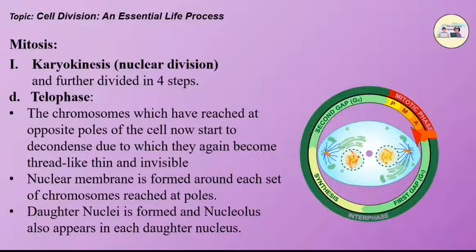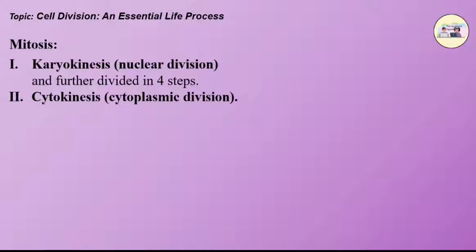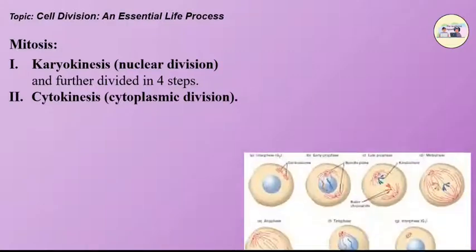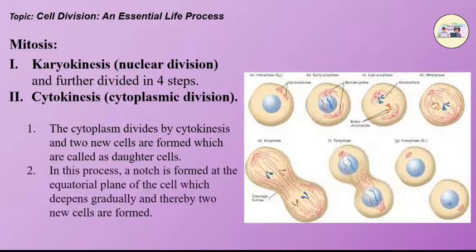The second part is cytokinesis, which is cytoplasmic division. The cytoplasm divides by cytokinesis and two new cells are formed, which are called daughter cells. In this process, a notch is formed at the equatorial plane of the cell which deepens gradually and thereby two new cells are formed.